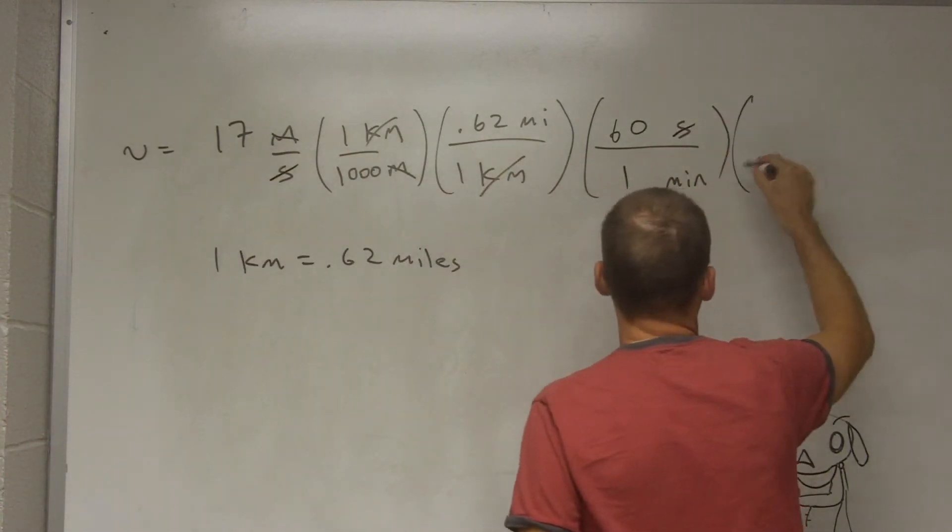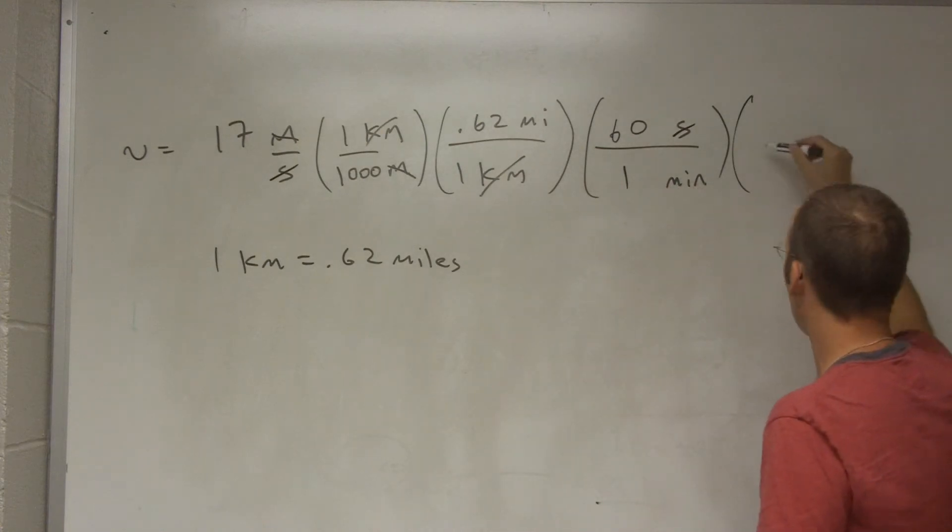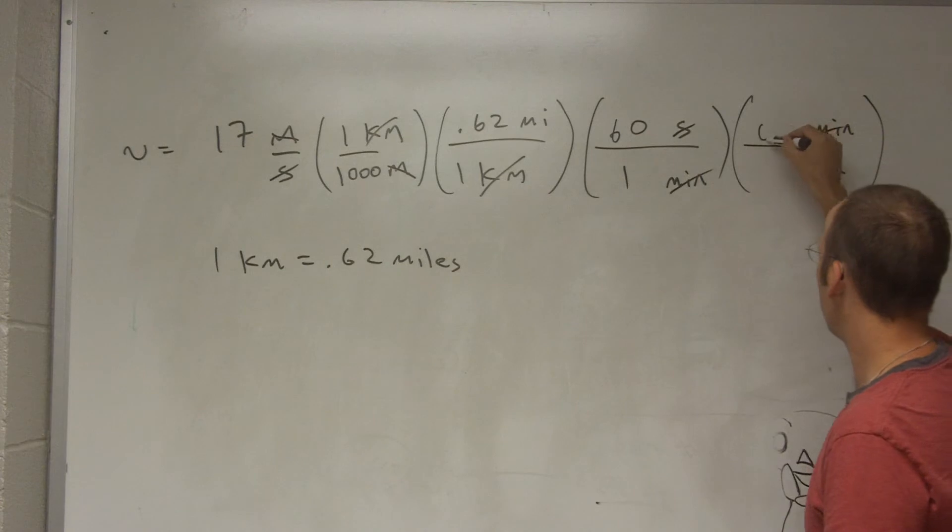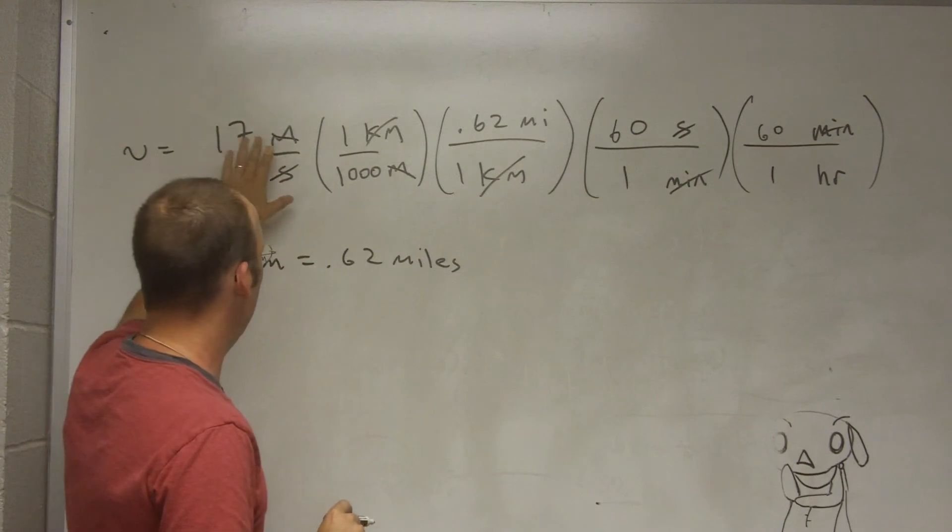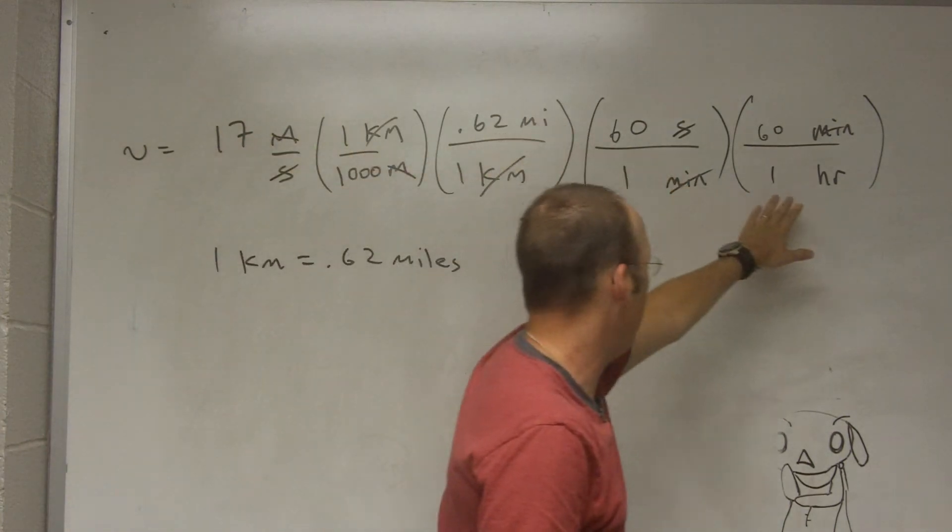And then I want to convert minutes to hours. So I do the same thing. Hour, minute, and minutes cancel. But I need to know how many are in there. Well, there are 60 minutes in one hour. So after doing all that, what am I left with? I'm left with miles over hours.